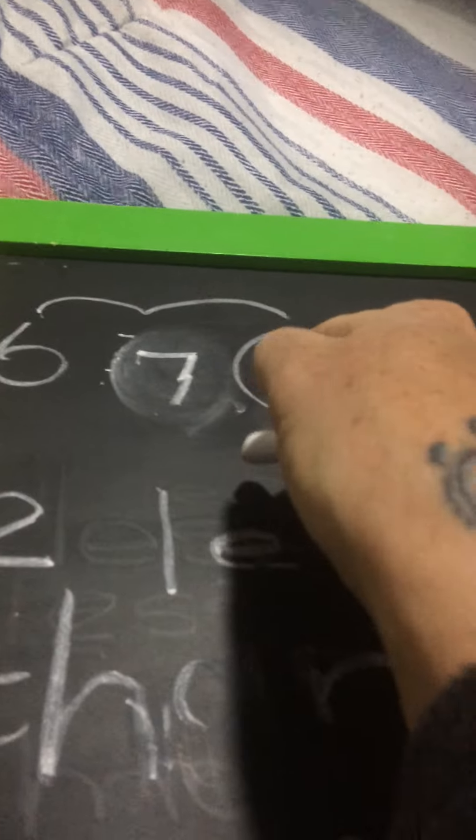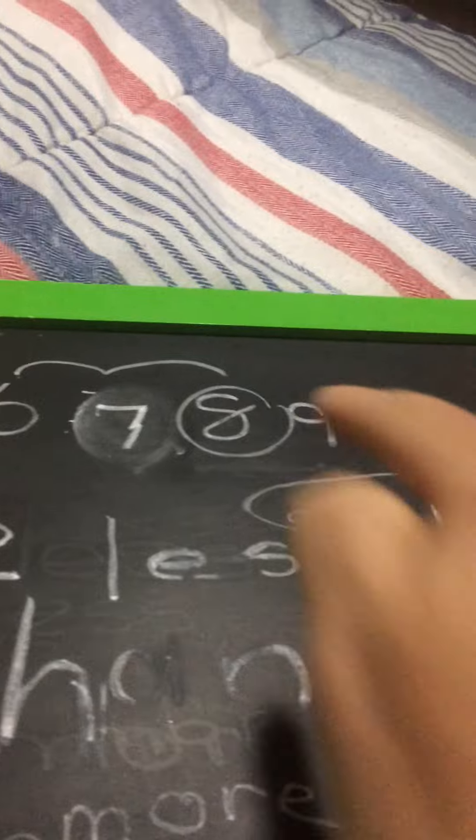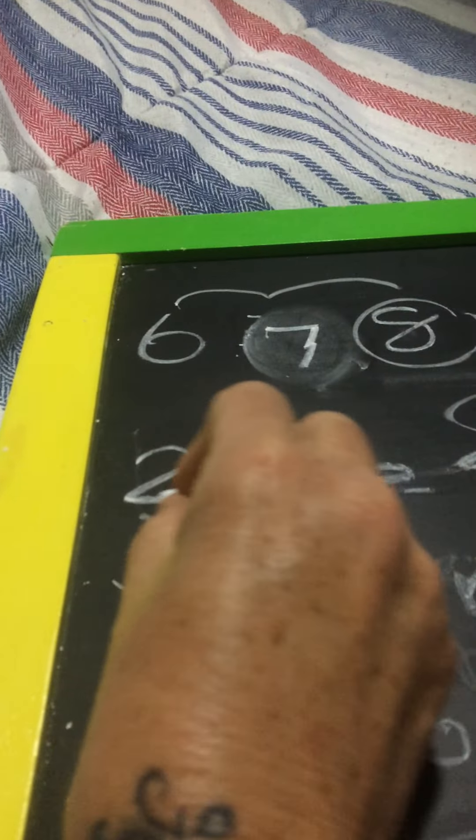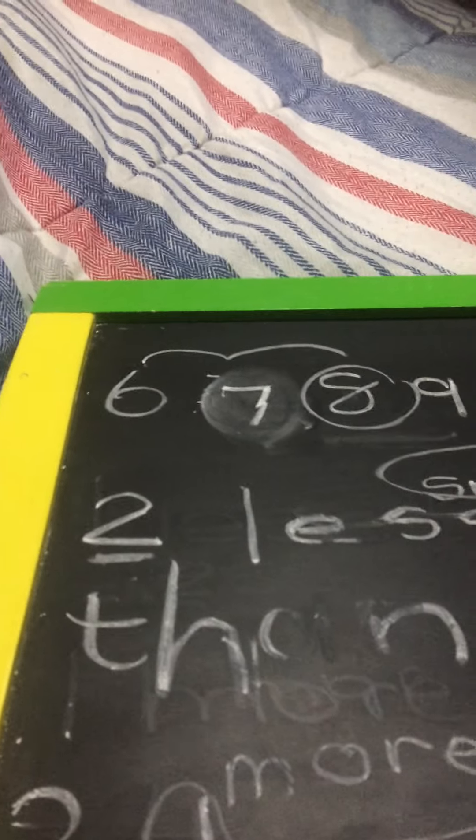If I want a number that's less, I go before. If I want a number that's more, I go after. And I count however much they need.